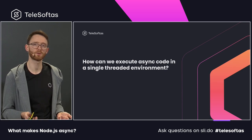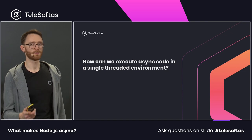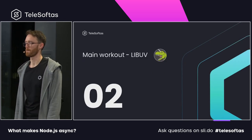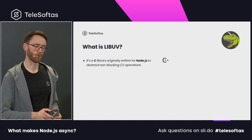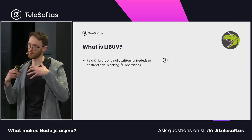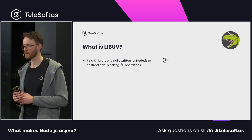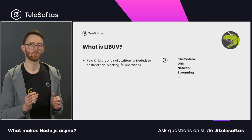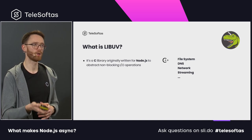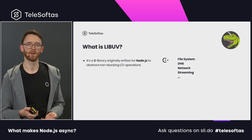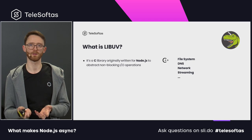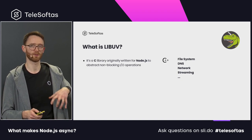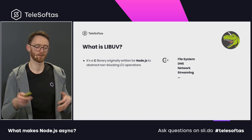How can we execute asynchronous code in a single-thread environment? The main workout: libuv. What is it? It's a C library originally written for Node.js to abstract non-blocking I/O operations. Basically, libuv helps with operating the file system, streaming, networking, HTTP requests, and similar tasks. It allows the operating system to handle these things in the background. JavaScript itself doesn't do this — it runs on Node.js, which has built-in support for the libuv library.